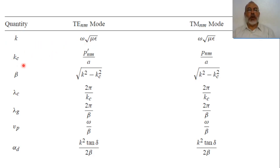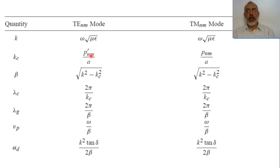The cutoff wavenumber for the transverse electric mode is B'_Nm over A. The cutoff wavenumber for the transverse magnetic mode is B_Nm over A, where B' is the root of the first derivative of the Bessel function of order N, and M is the number of that root. B is the root of the Bessel function itself, not the derivative.